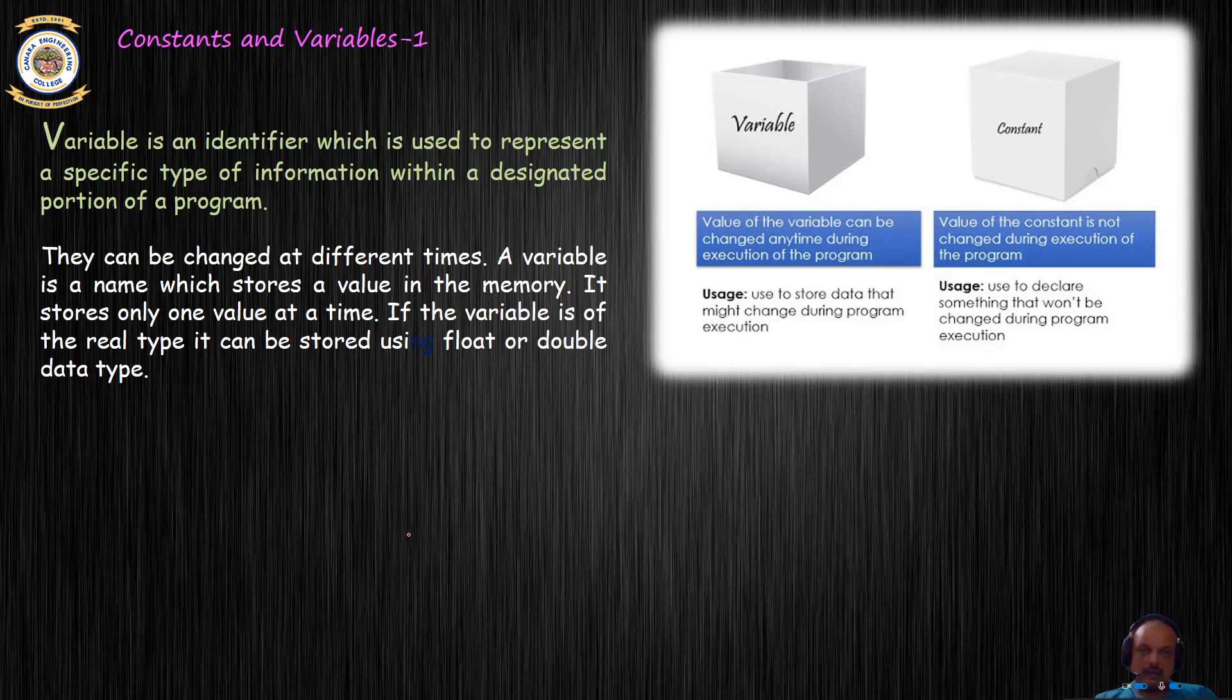Variables and constants are part of a memory or a memory block where information of a particular data type gets stored. Variable and constants are both identifiers as we had discussed in the last lecture.